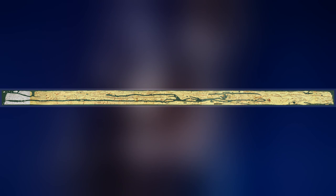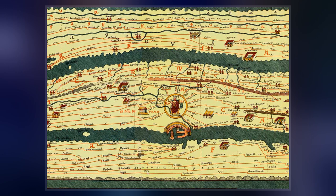Tabula Peutingeriana, also referred to as Peutinger's Tabula or Peutinger Table, is an illustrated itinerarium showing the layout of the cursus publicus, the road network of the Roman Empire.